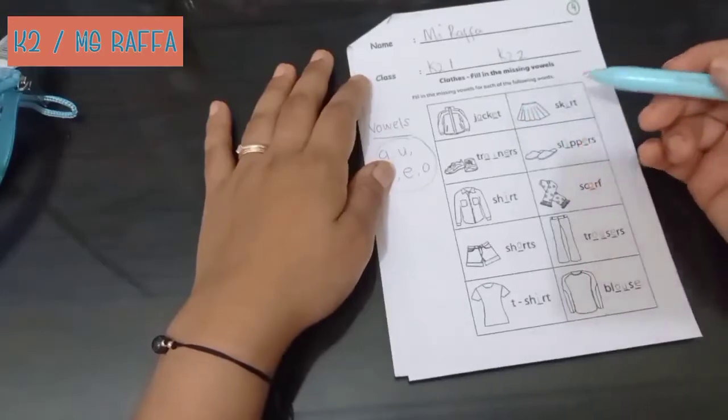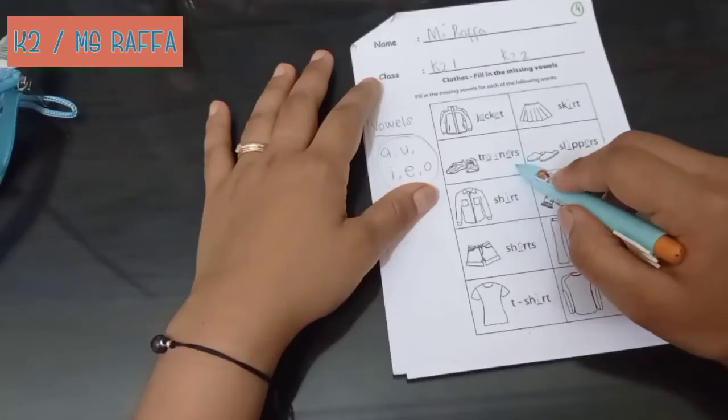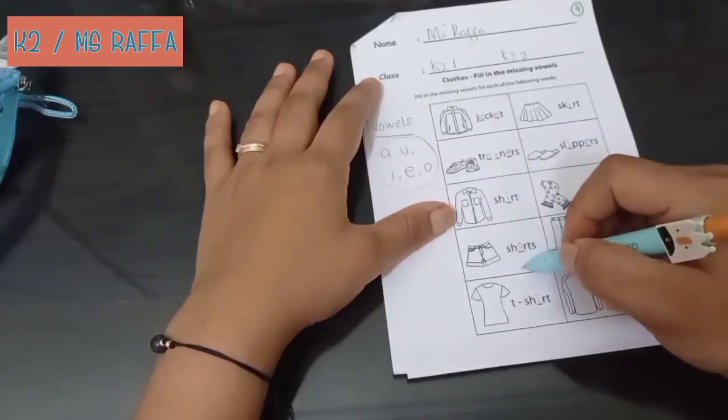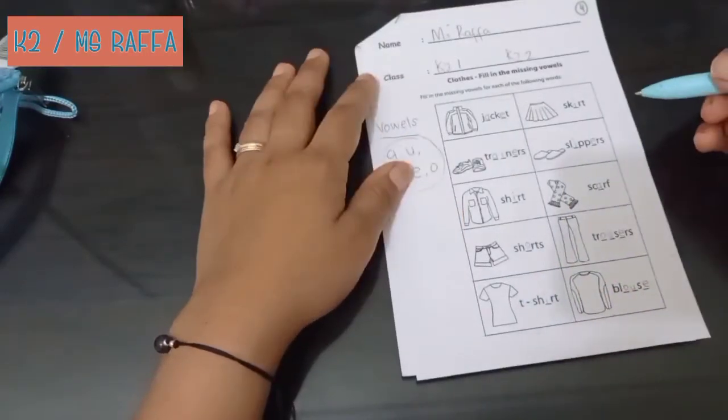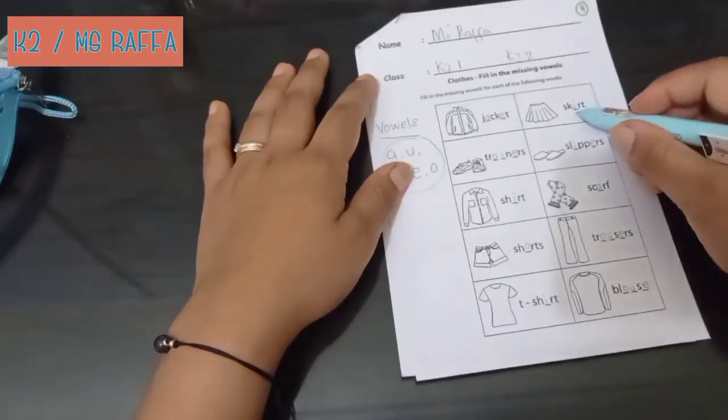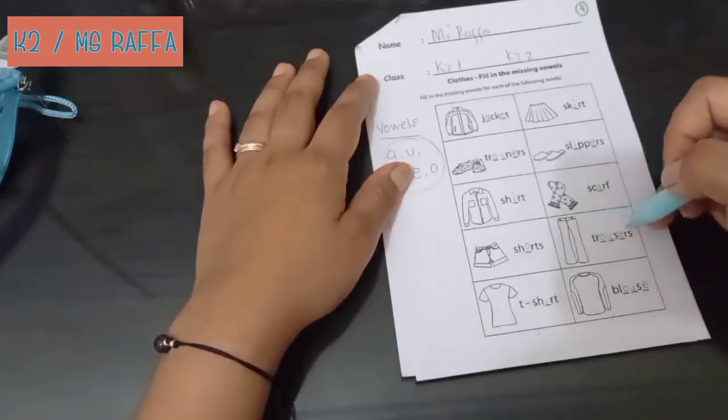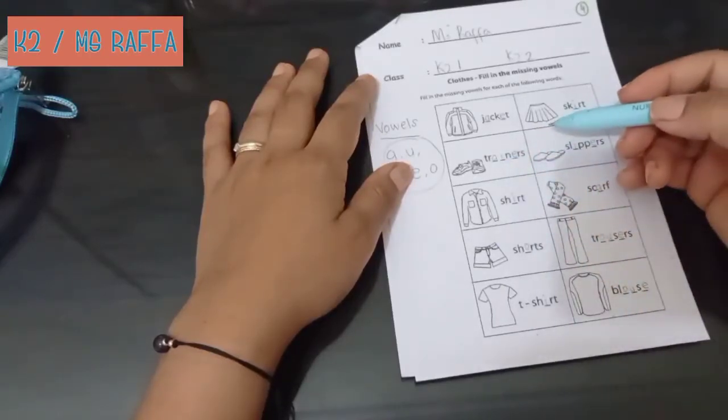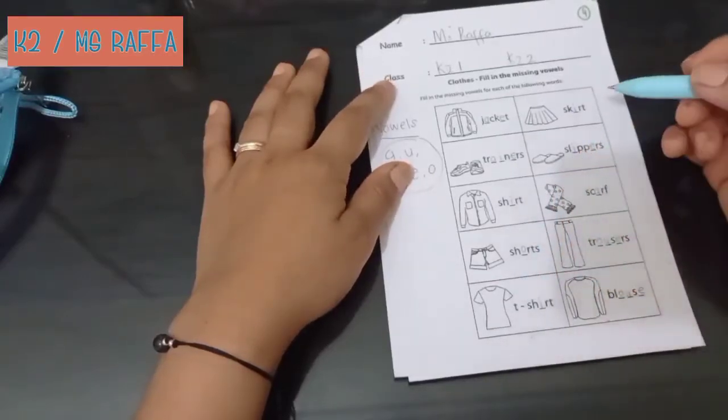Let's read again. Jacket. Skirt. Trainers. Slippers. Shirt. Scarf. Shorts. Trousers. T-shirt. Blouse. Shirt means kemeja. Slippers, sandal. Skirt, rok. Scarf, syal. Trousers, celana panjang. Shorts, celana pendek. Trainers, sepatu olahraga. Jacket, jaket. Blouse, baju. T-shirt, kaos.